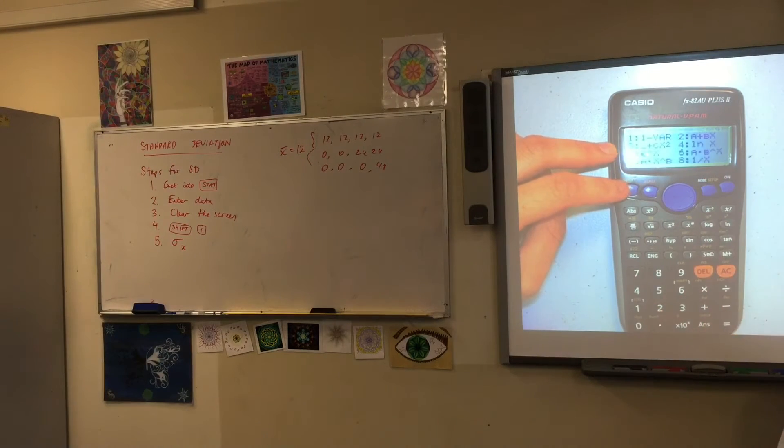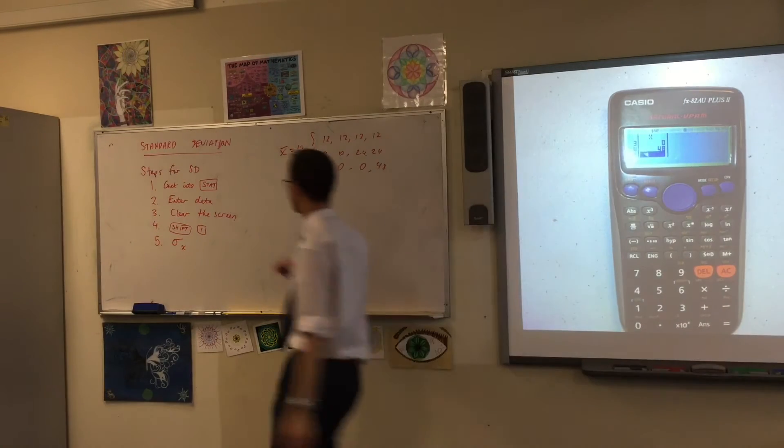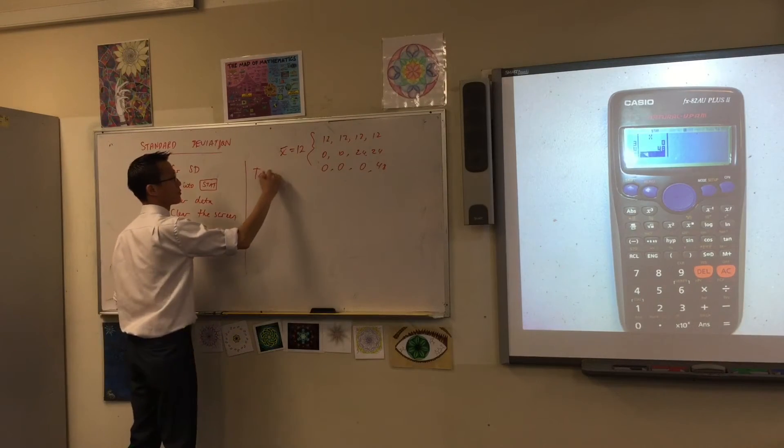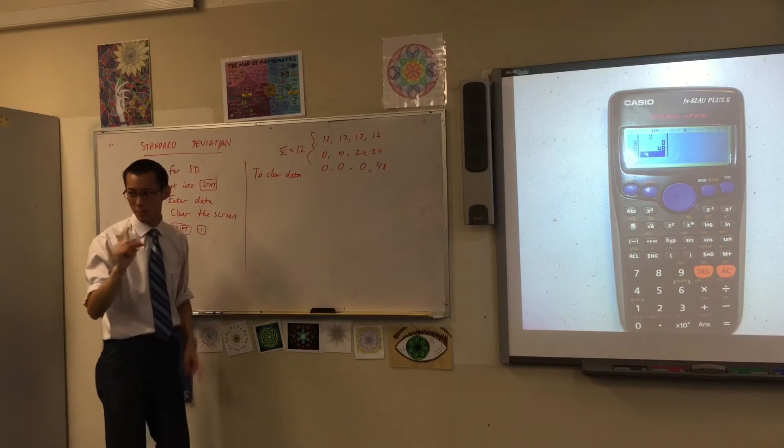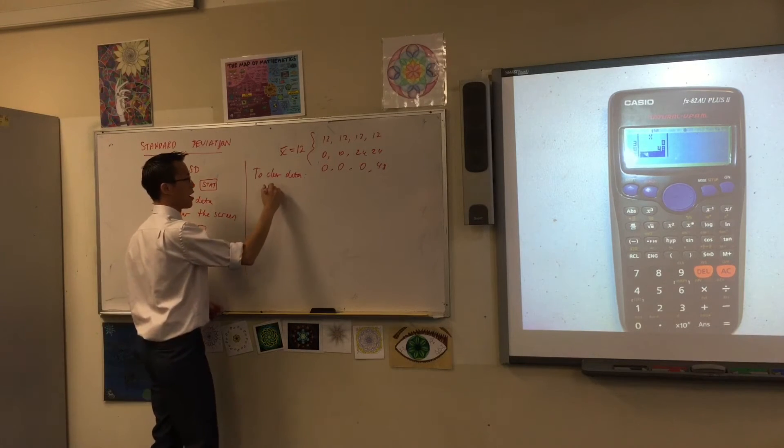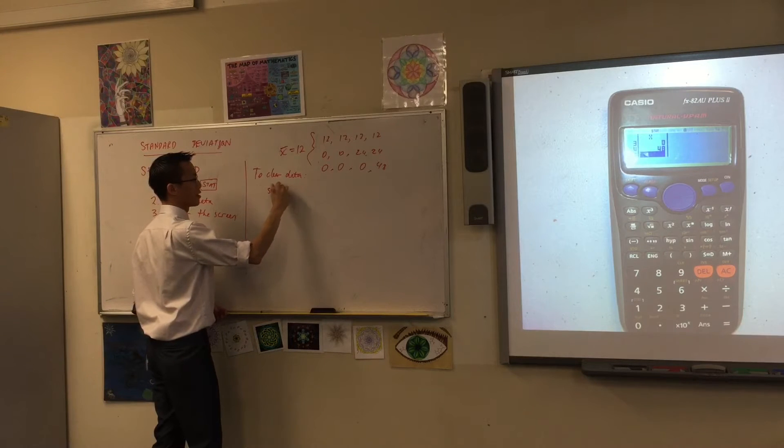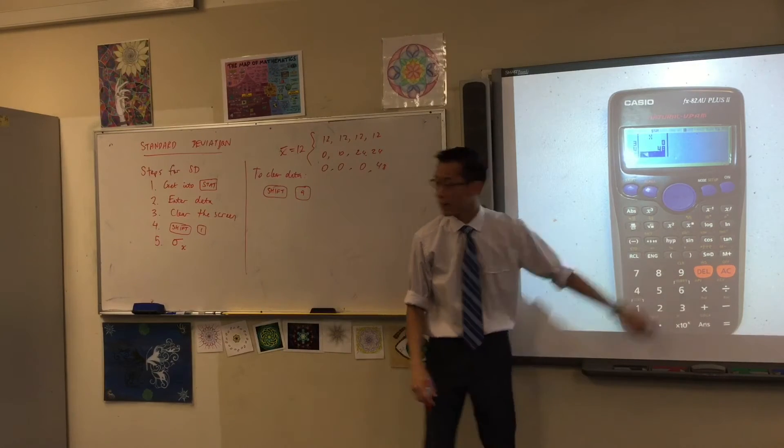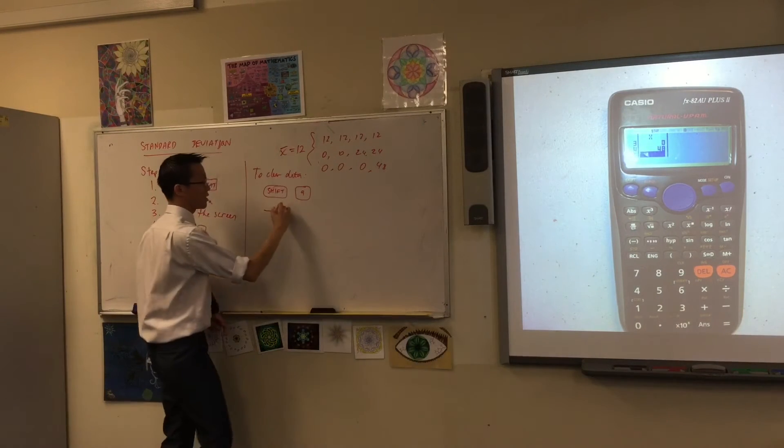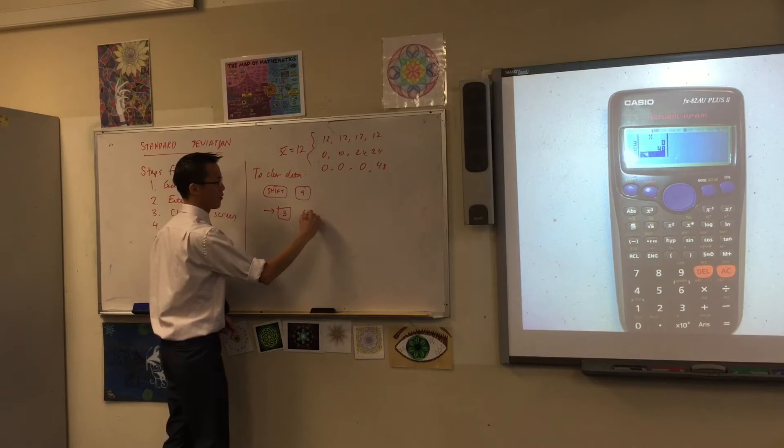Every time I clear all, I have to change it back. So do I, which is a bit of a pain. How to clear it? I think you go... There actually may be a quicker way than this, but the way that I know it is shift 9 will get you to the clear screen, and then from there I think you say 3 for all.